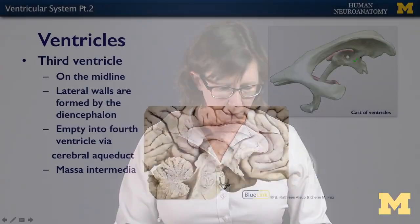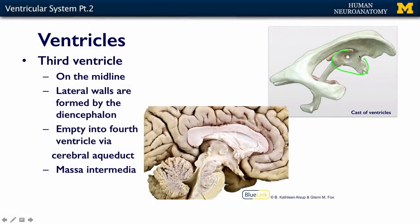The third ventricle is on the midline, pictured here on the cast and here on the cadaveric brain. It's very hard to see when you cut the brain in half because it's very thin. Its walls are formed by the diencephalon — this area of the brain — including the hypothalamus and the thalamus. We'll talk more about these structures when we discuss gray matter and cortex, but for now they form a narrow cavity.